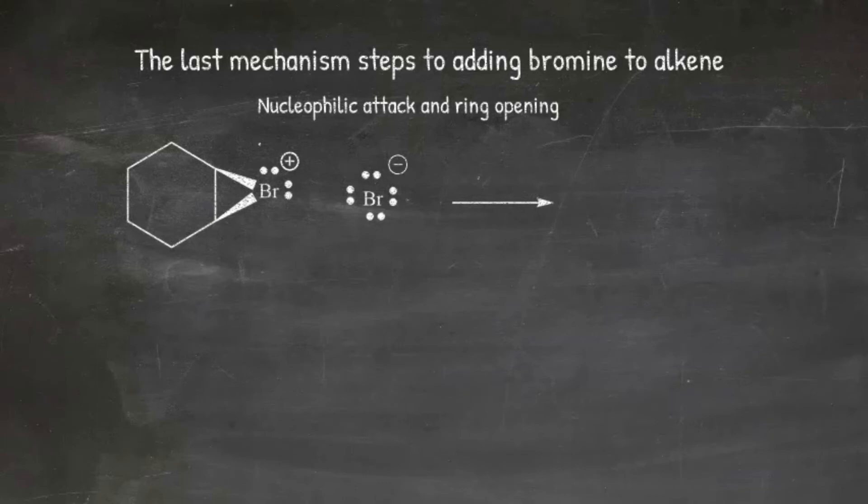This is seen by the first arrow that starts at the lone pair of the bromide ion as it stretches, and the arrowhead points at the carbon of the cyclohexylobromonium ion to form a bond.